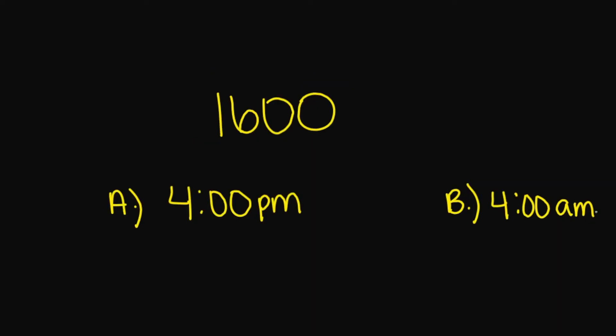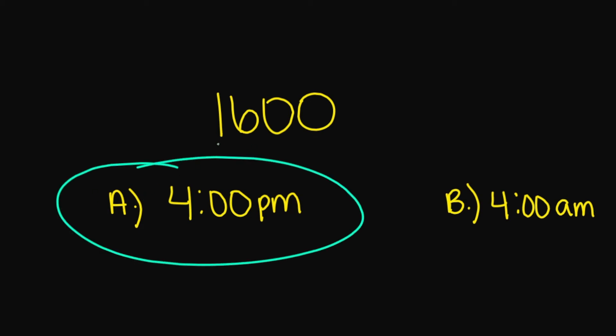Let's look at 1600. Is 1600 A, 4 p.m., or B, 4 a.m.? 1600 equals A, 4 p.m., because we subtract 12 and this is going to take us back to our regular time, which is 4 p.m.